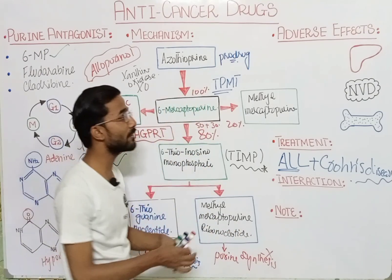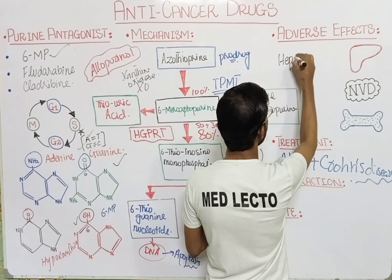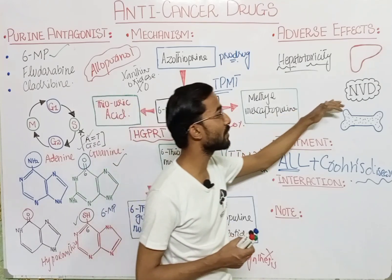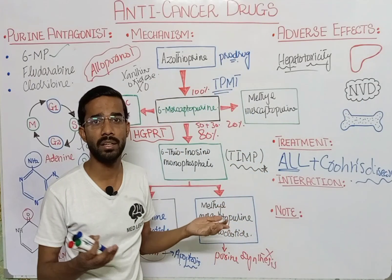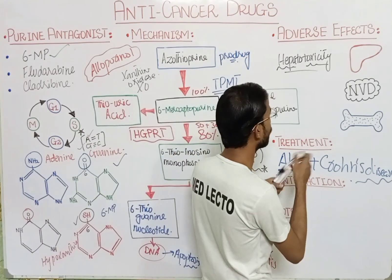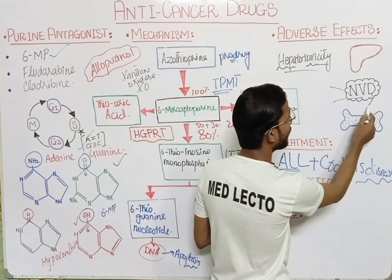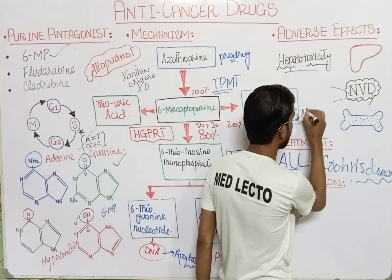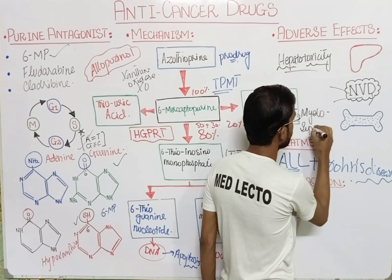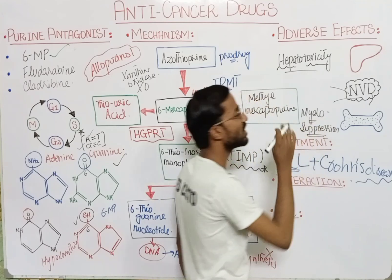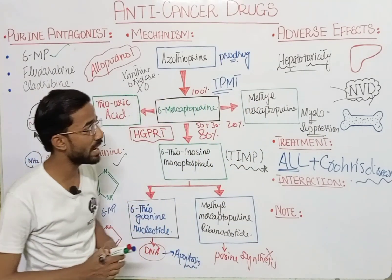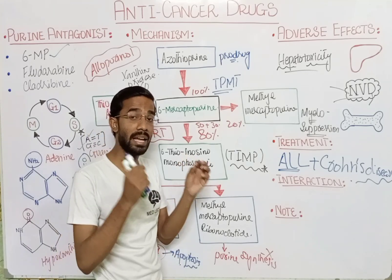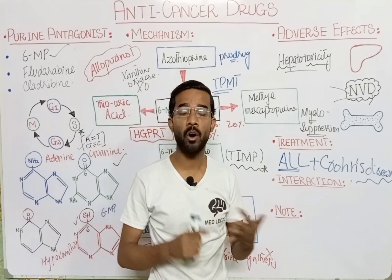The adverse effects include hepatotoxicity — toxicity of the liver. Next is NVD: nausea, vomiting, and diarrhea. These are basically the adverse effects of the purine antagonists. You will also see myelosuppression — a decrease in red blood cells, white blood cells, and platelets. If you take 6-mercaptopurine, you can monitor by CBC report, LFT, and RFT tests.